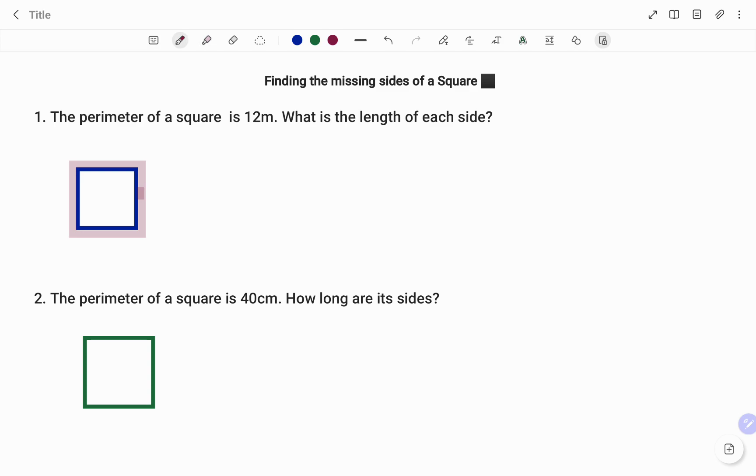However, one of the properties of a square is that all the sides are equal. So therefore, if, for example, the side is S meters, the side will also be S meters. We have S meters and S meters.